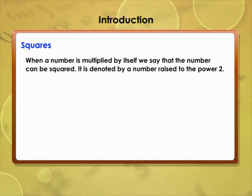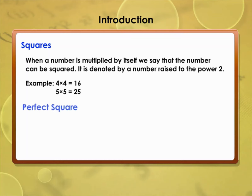Introduction to squares: when a number is multiplied by itself, we say that the number is squared. It is denoted by a number raised to the power 2. Example: 4 × 4 = 16, 5 × 5 = 25. A number is called a perfect square if it is expressed as the square of a number.